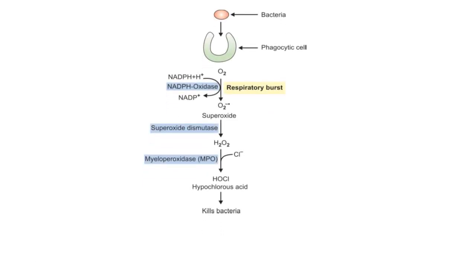This picture shows the respiratory burst in a phagocytic cell after engulfing bacteria. There is synthesis of superoxide from oxygen by NADPH oxidase enzyme. This superoxide is converted to hydrogen peroxide by superoxide dismutase. The hydrogen peroxide, combined with chloride, is converted to hypochlorous acid by myeloperoxidase enzyme, which kills the bacteria.